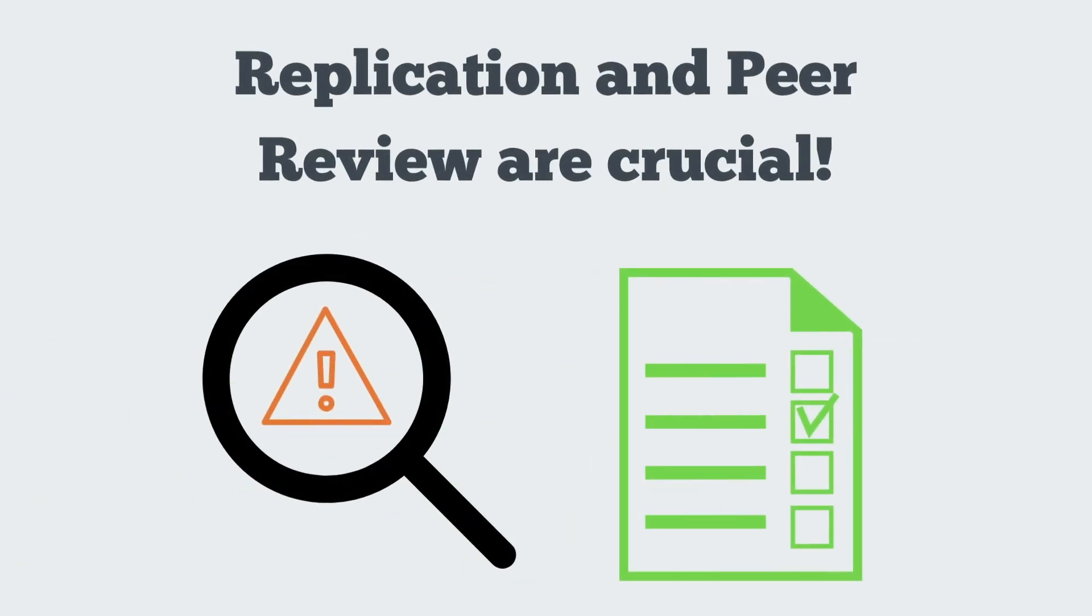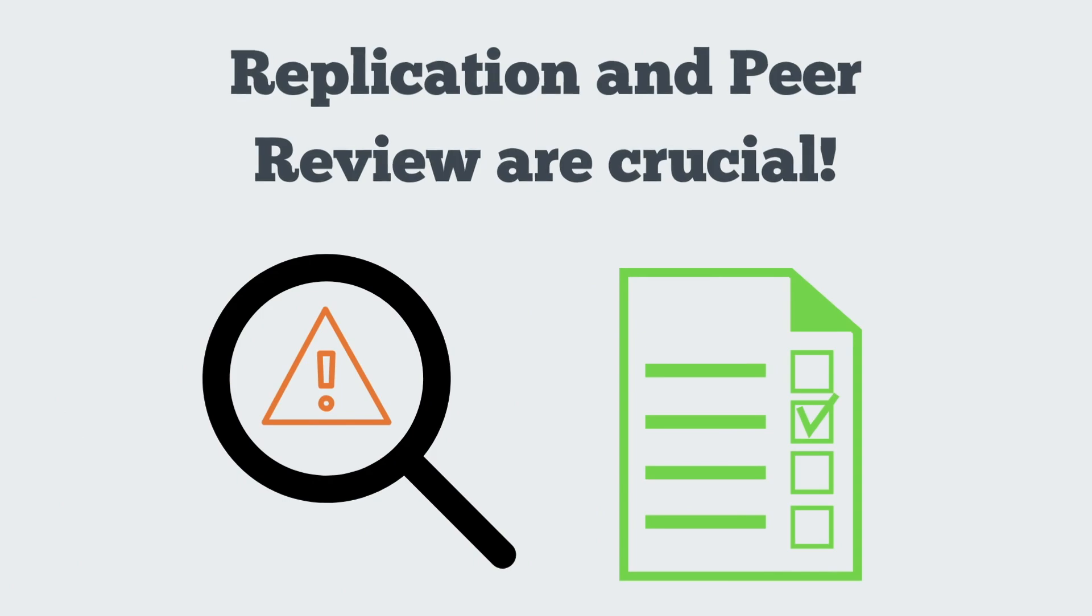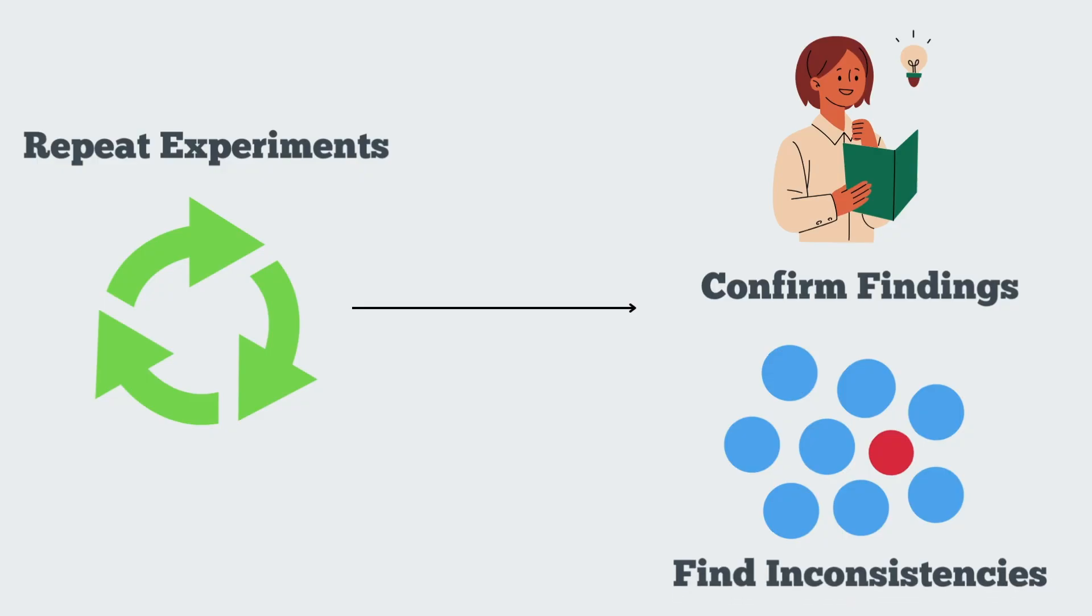Replication and peer review are fundamental in the scientific process, especially in the context of error identification and validation of results. Replicating experiments under similar conditions allows researchers to confirm findings and identify inconsistencies that may suggest errors.